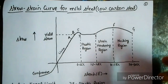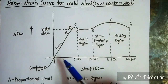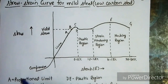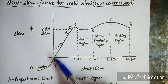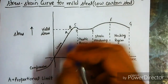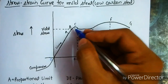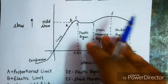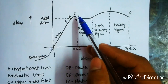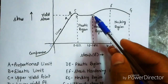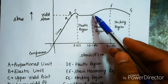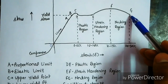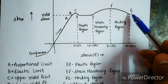The stress-strain curve for mild steel (low carbon steel) is obtained from a tensile test; compression gives a negative curve. On this graph, point A is the proportional limit, B is the elastic limit, C is the upper yield point, D is the lower yield point, E is the start of strain hardening, F is the ultimate stress point, and G is the point of failure.